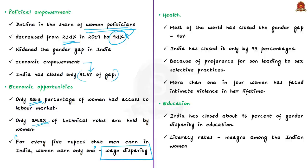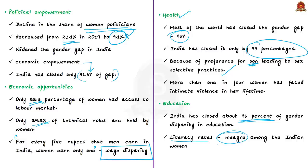Regarding health, most of the world had closed the gender gap by over 95 percent in this dimension, but India has closed it only by 93 percent. This is largely because of the preference for a son as an offspring, leading to sex-selective practices. More than one in four women has faced intimate violence in her lifetime. On a positive note, India has closed about 96 percent of gender disparity in education, though literacy rate remains meager among Indian women.